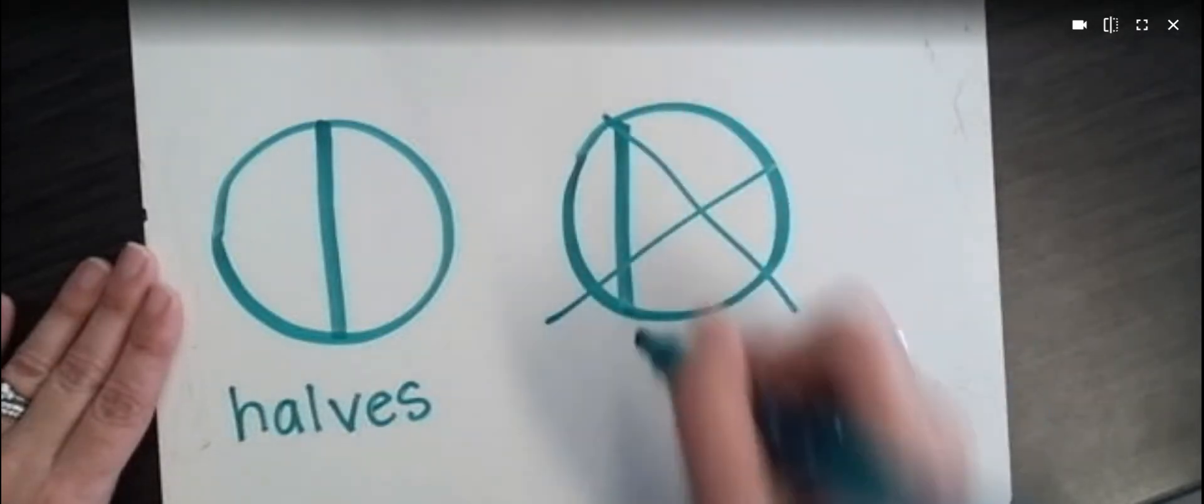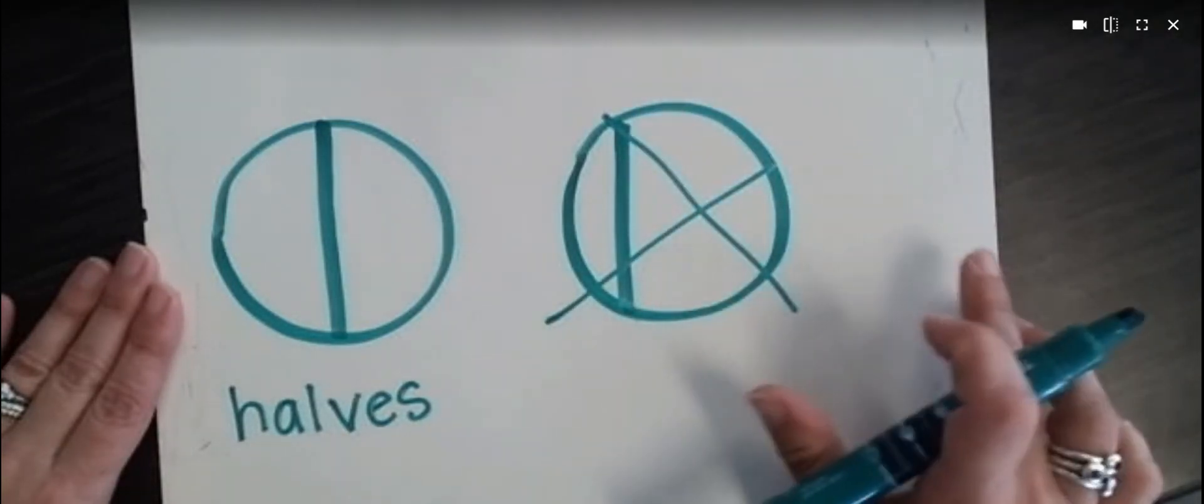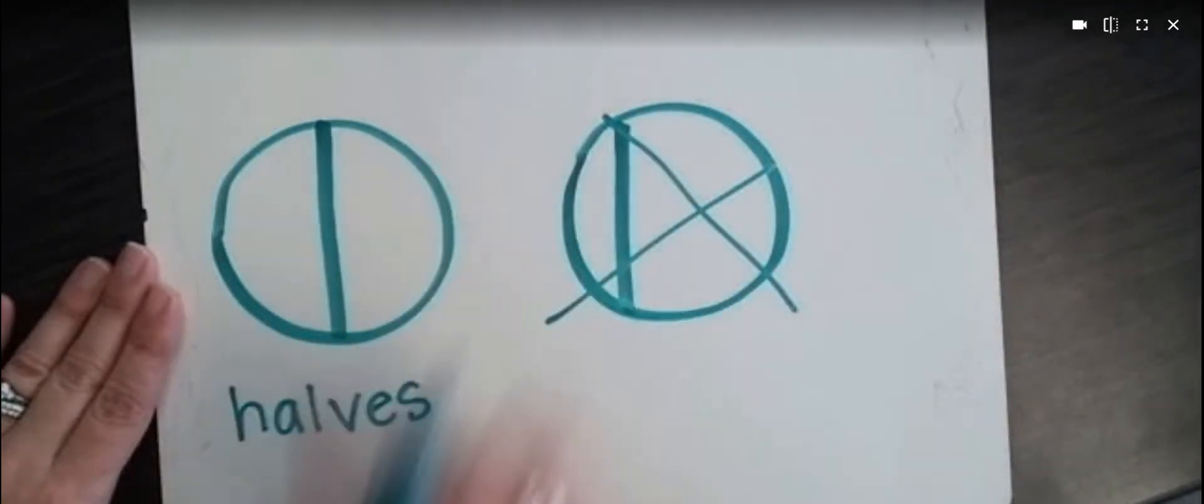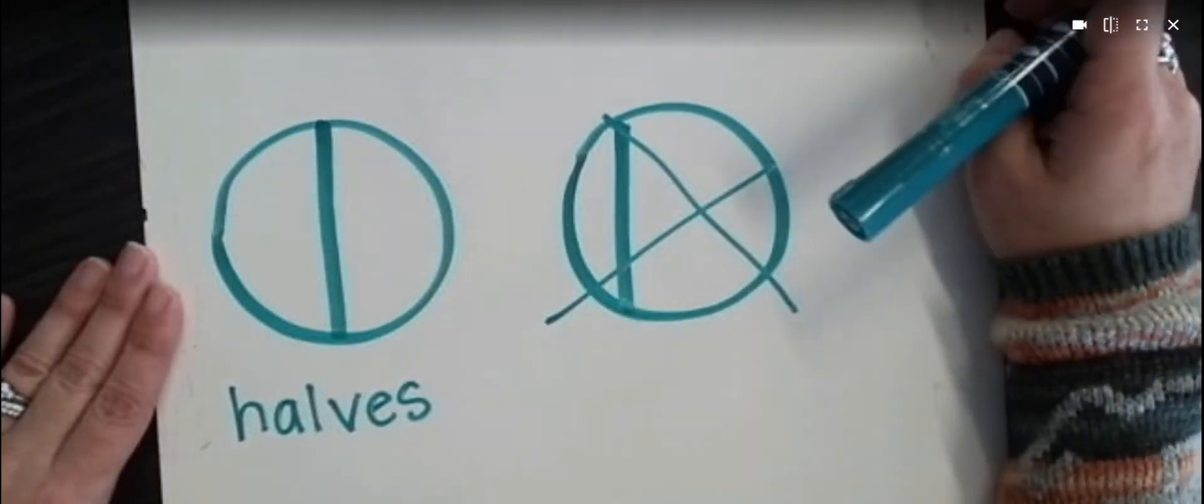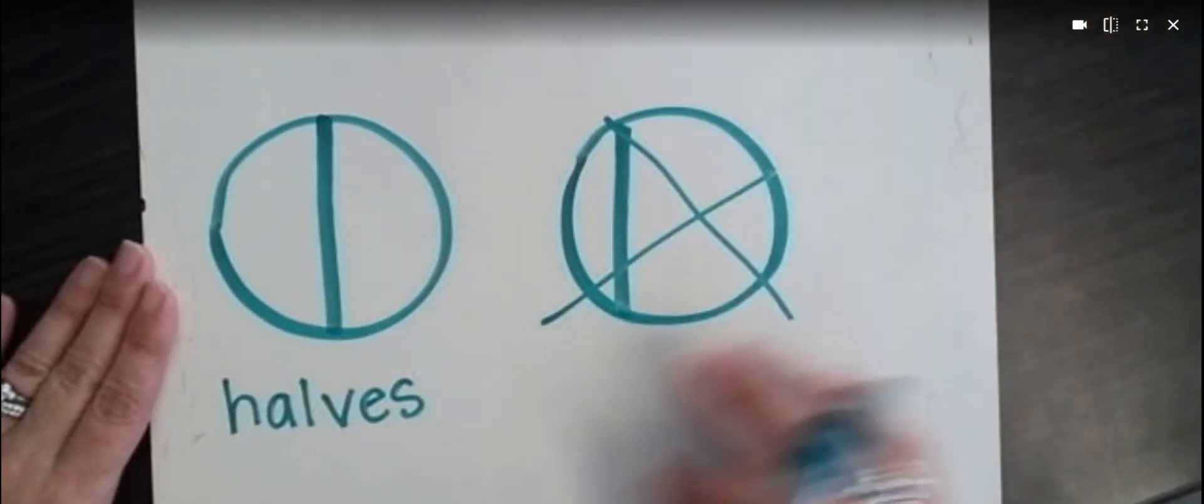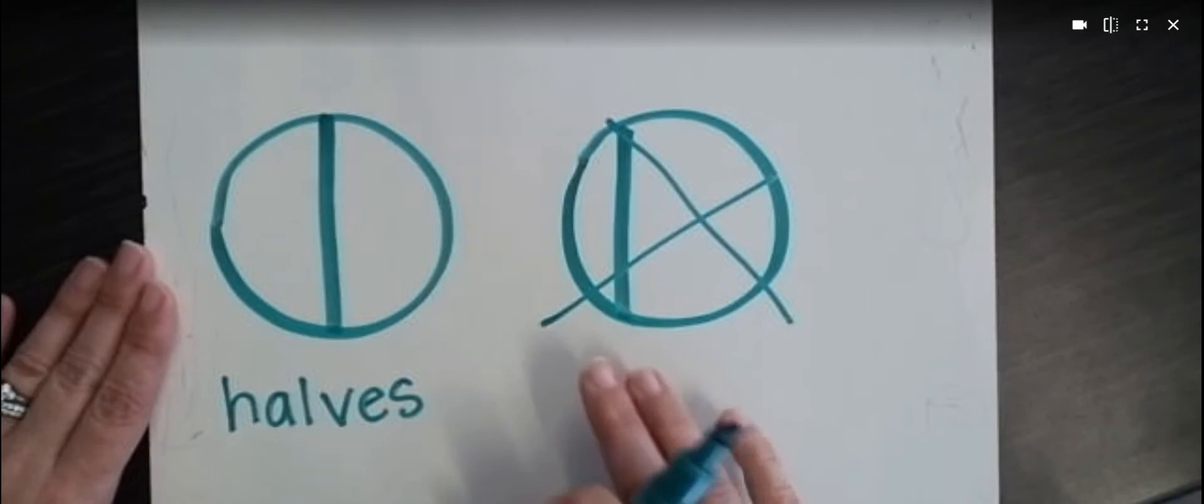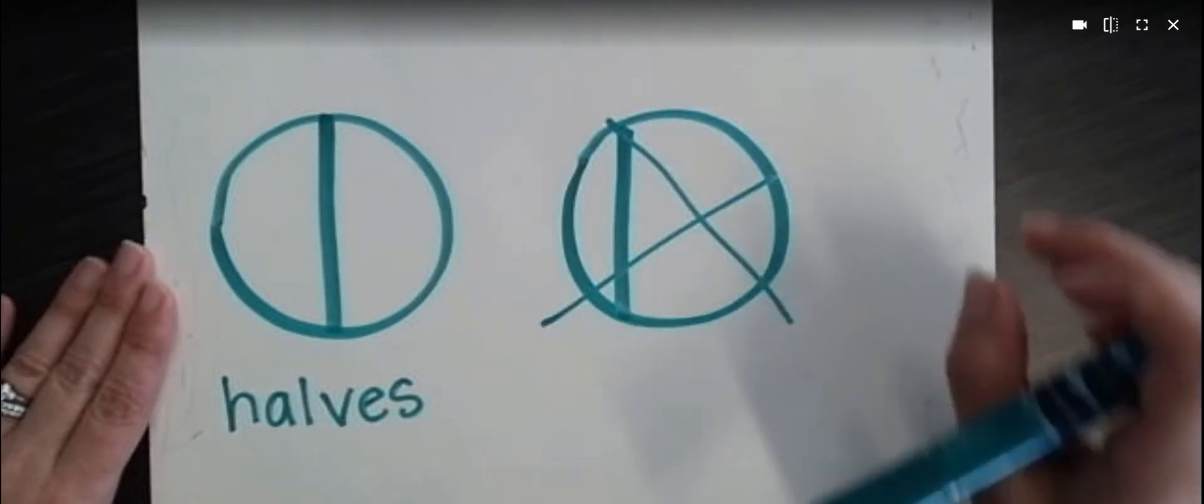So if you divided a cookie, and you gave this piece to one person, and this piece to the other person, they would say, that's not fair, because those parts are not equal. Okay, so we do not call them halves if they're not equal.